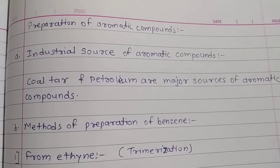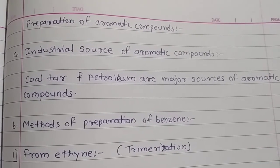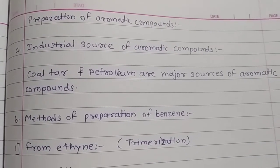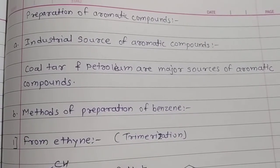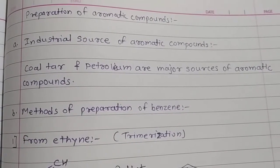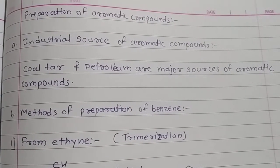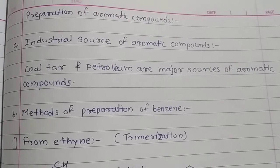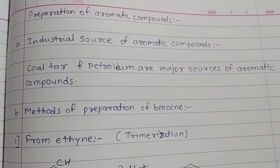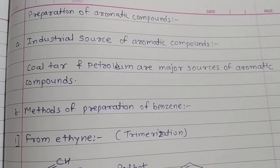Hello guys, today we will see preparation of aromatic compounds. Industrial sources of aromatic compounds are coal tar and petroleum, from which aromatic compounds are prepared in industry.